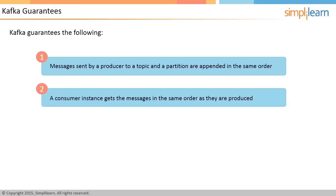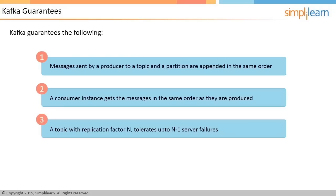If messages are produced in the order 1, 2, 3, 4, 5, 6, they will be received in the order 1, 2, 3, 4, 5, and 6. This is important in messaging systems as the dependency is on the time order of messages. Guarantee 3 — a topic with replication factor N tolerates up to N-1 server failures. For example, when the replication factor is specified as 3, there will be no loss of messages even if two machines fail.